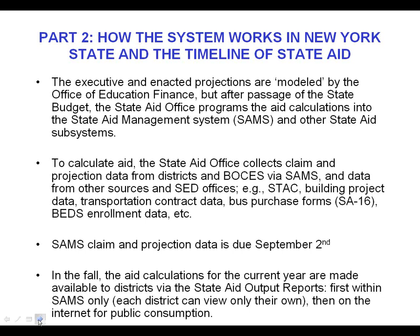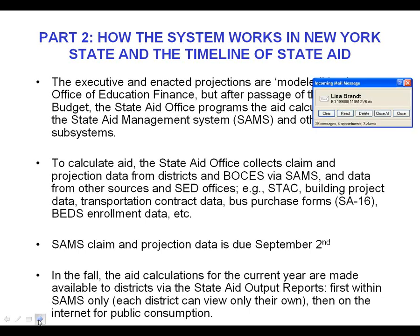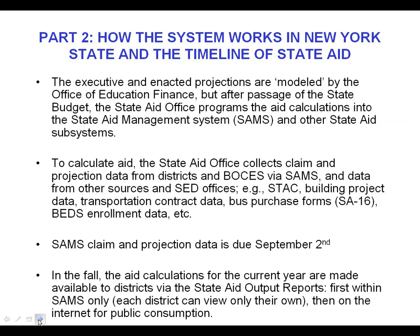So how does all this translate into what we do in our office? The executive proposals, projections — the numbers that you see — and the enacted projections are modeled on a system that's not even part of the state aid office. It's another unit of the education finance office. After the state budget passes, in our office we essentially recreate those aid calculations in SAMS, and the ones that we create in SAMS are the calculations that are the basis for your state aid payment.